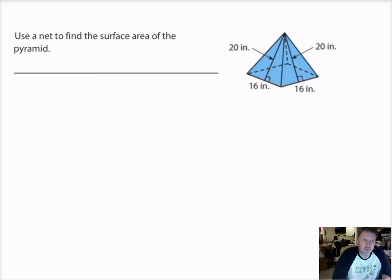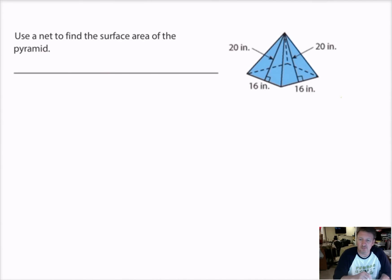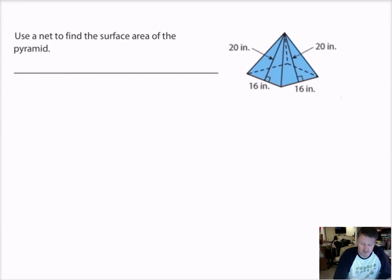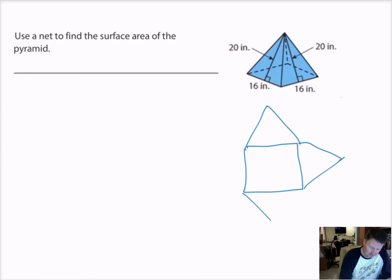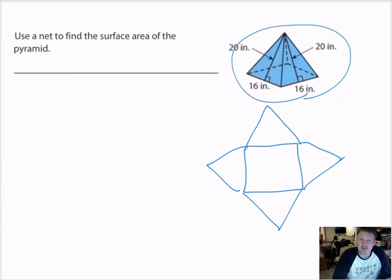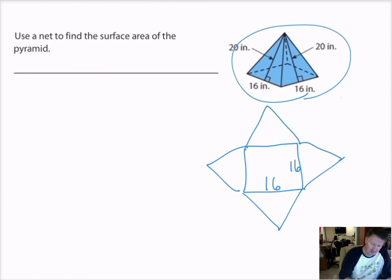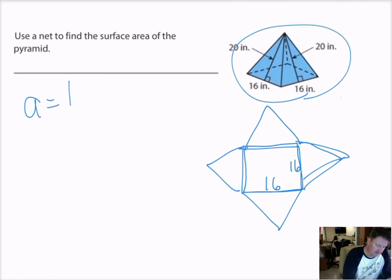So the first thing I want to do is use a net to find the surface area of this pyramid. This shape is a rectangular pyramid, so that means I have a base that's a rectangle, and then each of my sides is a triangle. Because they meet at a point, every triangle is the same size. My base is 16 and the height of the square base is 16 as well, making it a square. So my formulas: area of a rectangle is base times height, and area of a triangle is one-half base times height.